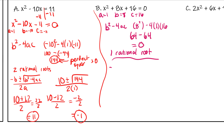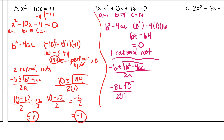We'll have the opposite of b plus or minus the square root of b squared minus 4ac, all over 2a. B is 8, so we have negative 8 plus or minus the square root of 0, all over 2 times 1. The square root of 0 is 0, and adding or subtracting 0 from negative 8 gives the same thing. So we end up with negative 8 over 2, which is negative 4. Our answer is x equals negative 4.